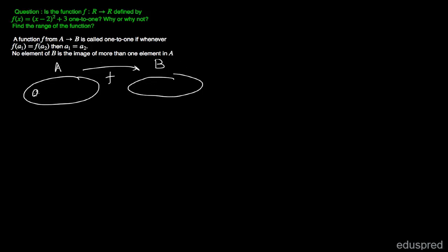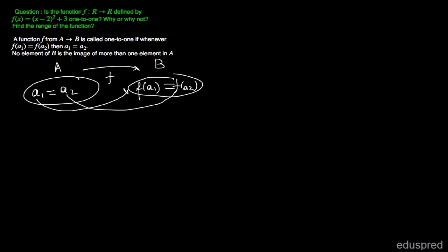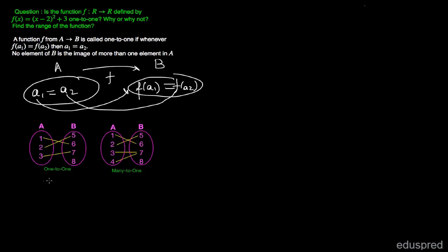If a1 and a2 are two elements in the domain which map to f(a1) in the range and f(a2) in the range, then if the function is one-to-one and you are given that f(a1) is equal to f(a2), then it should be the case that a1 is also equal to a2. That is, no element of B is the image of more than one element in A. So a function is one-to-one if every input has a unique output.